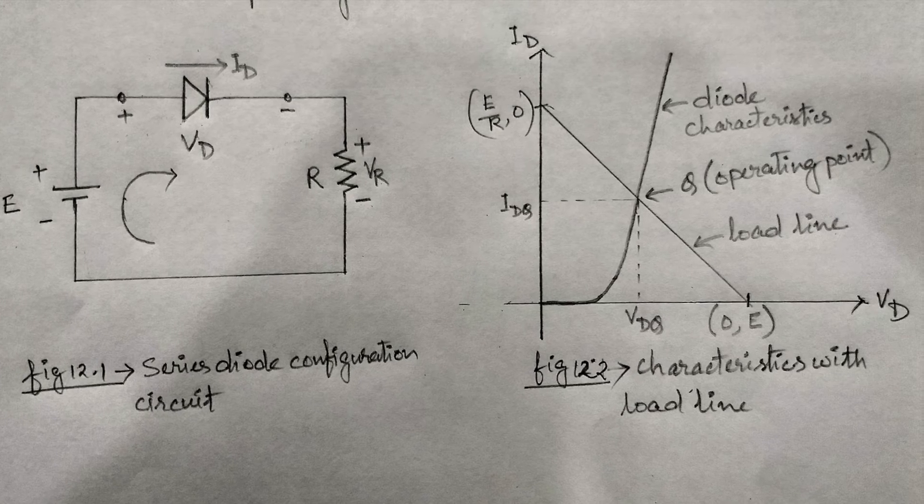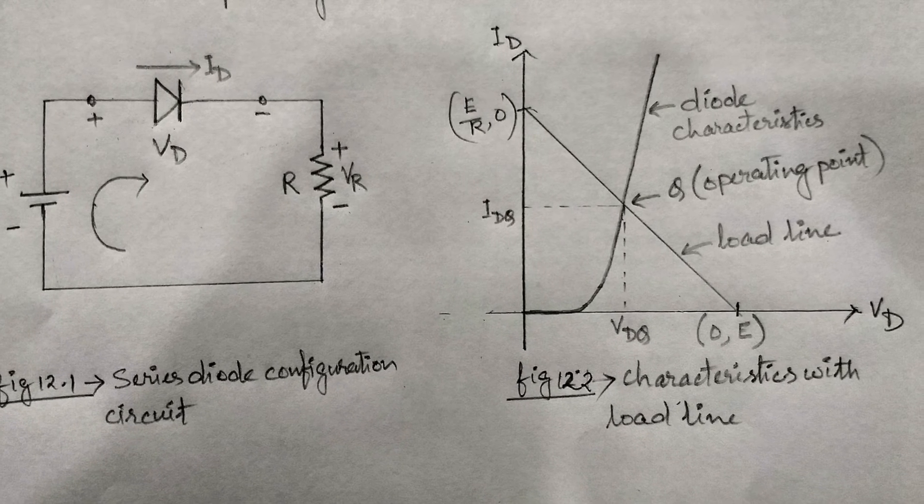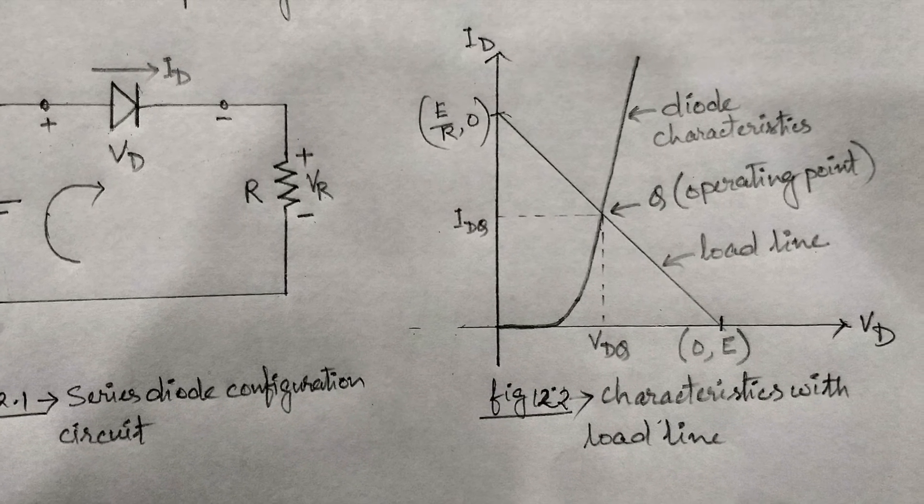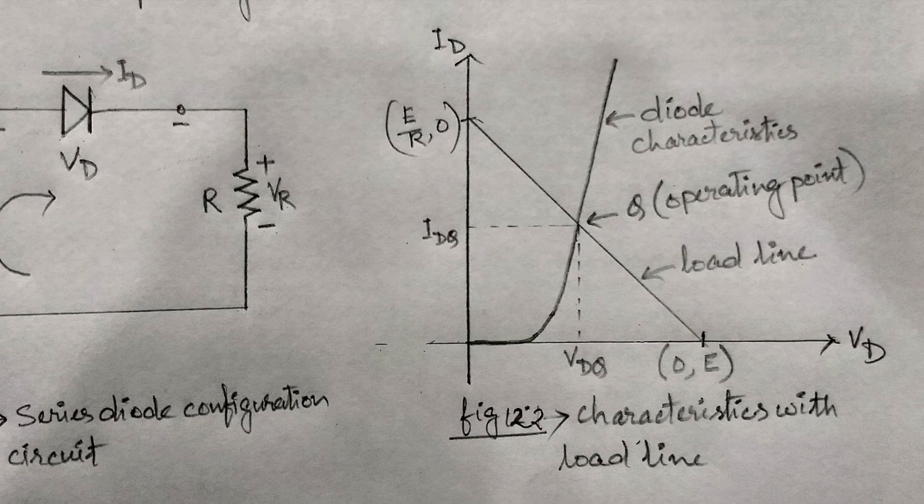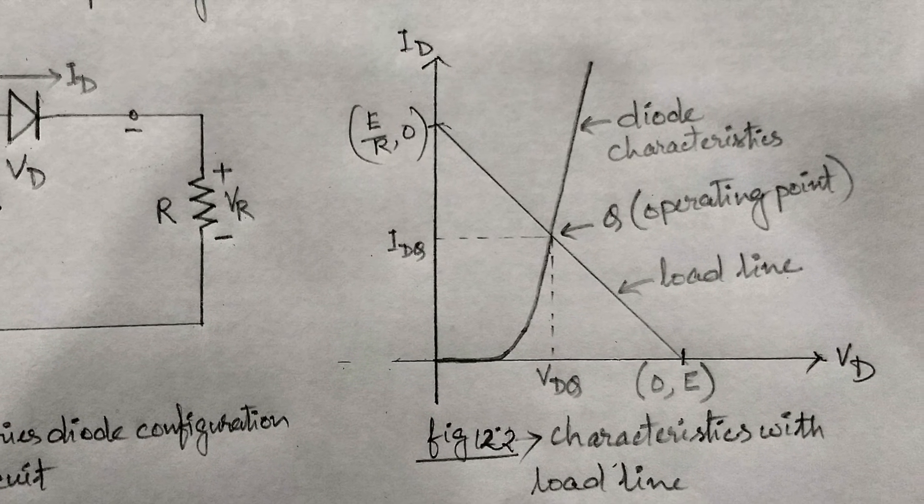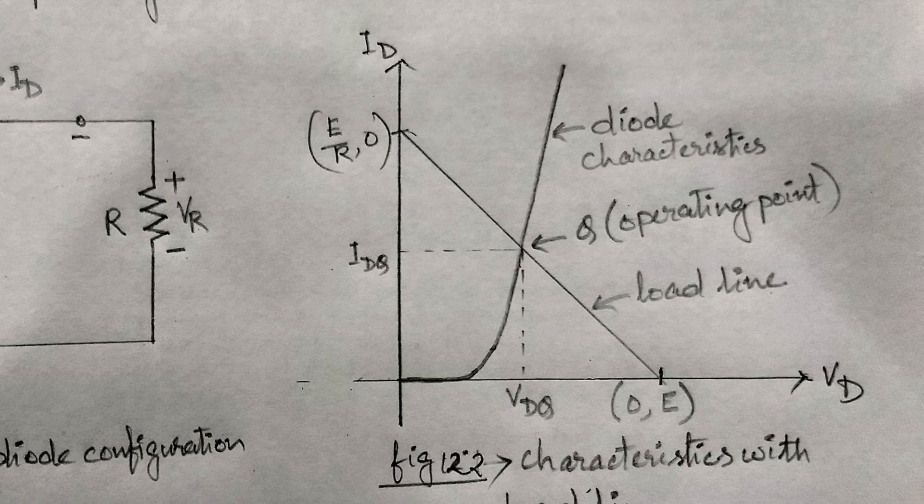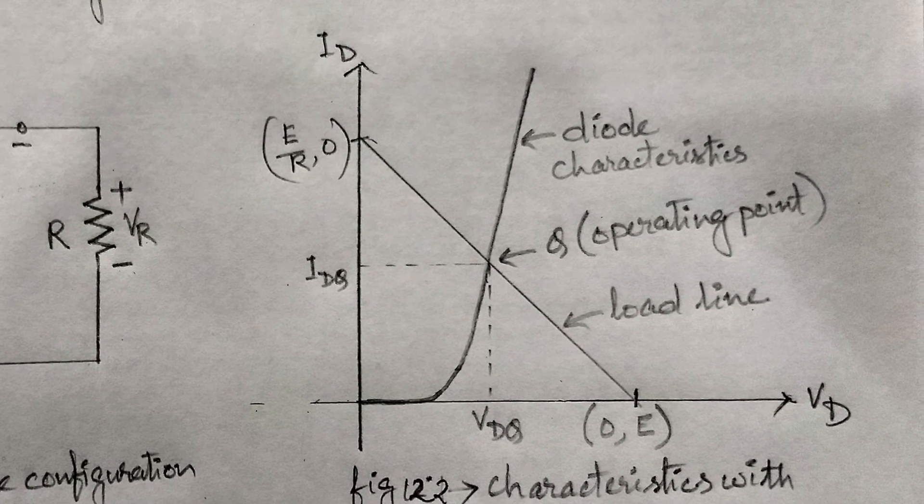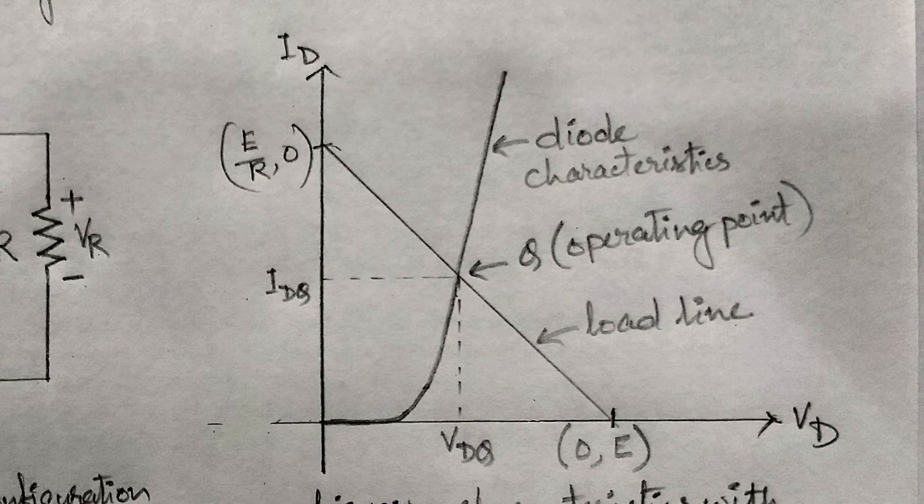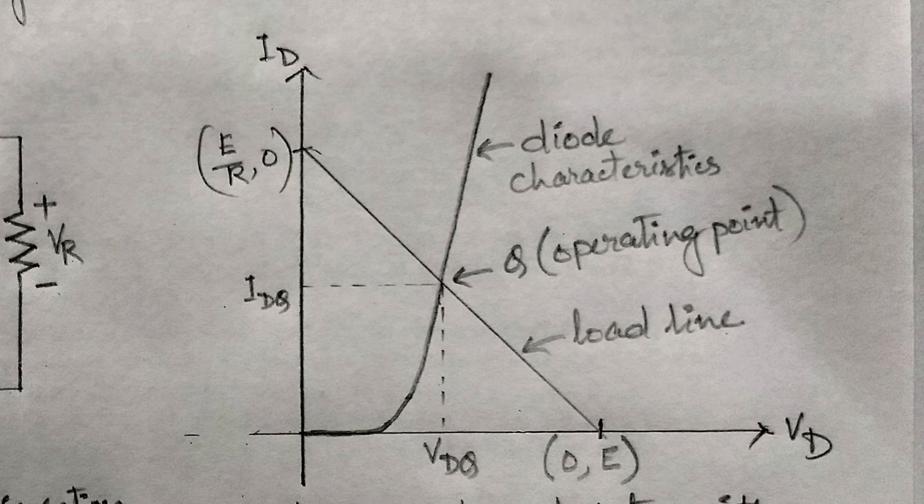Now, we have a load line defined by the network and a characteristics curve defined by the device. The point of intersection between the two is the operating point. Similarly, we can find Vdq and Idq as shown in the figure.